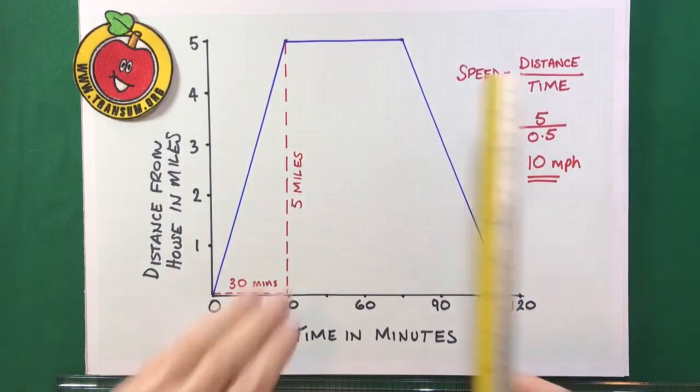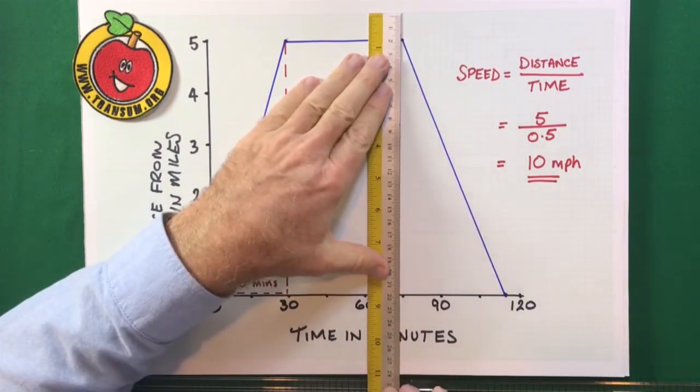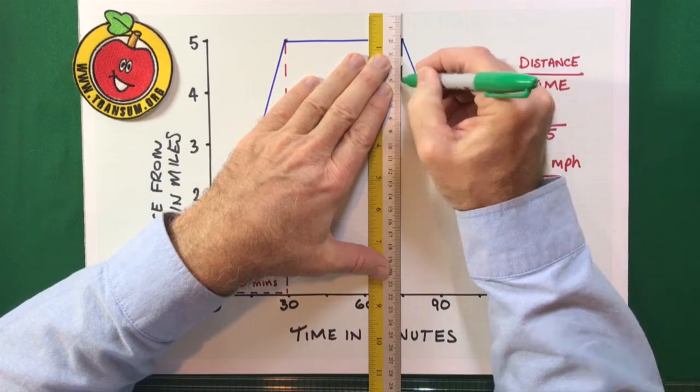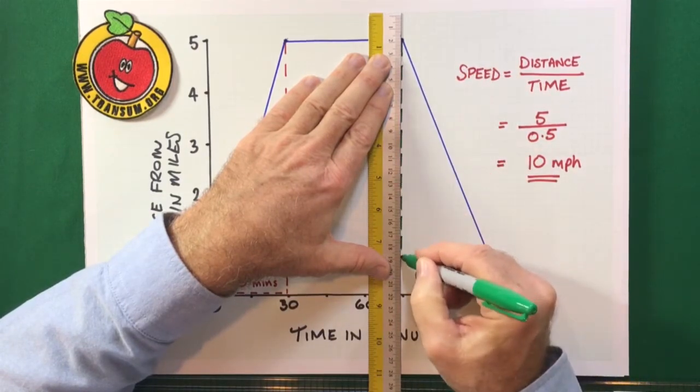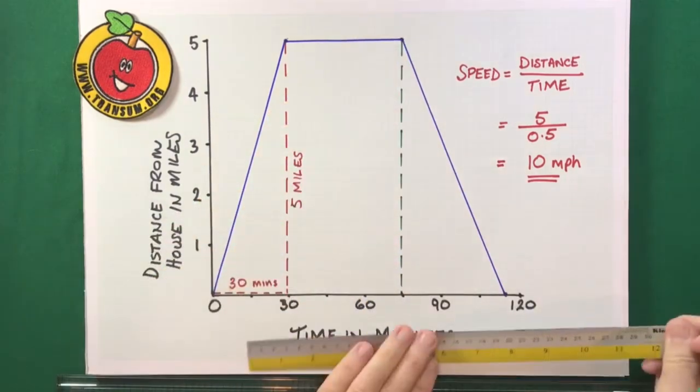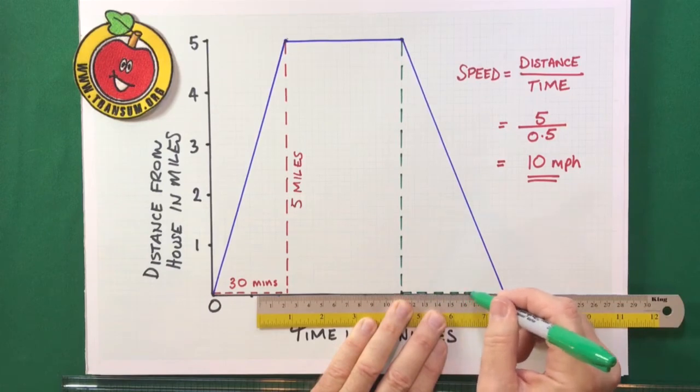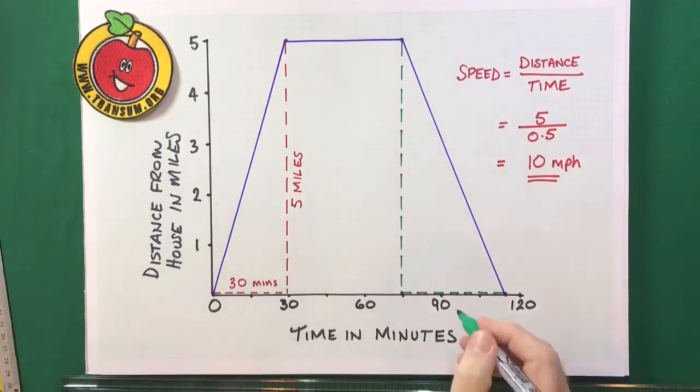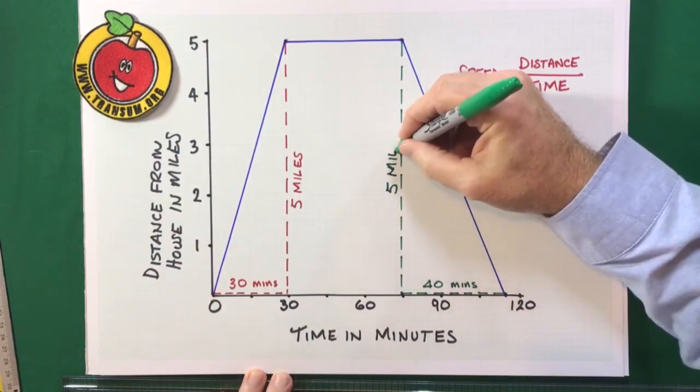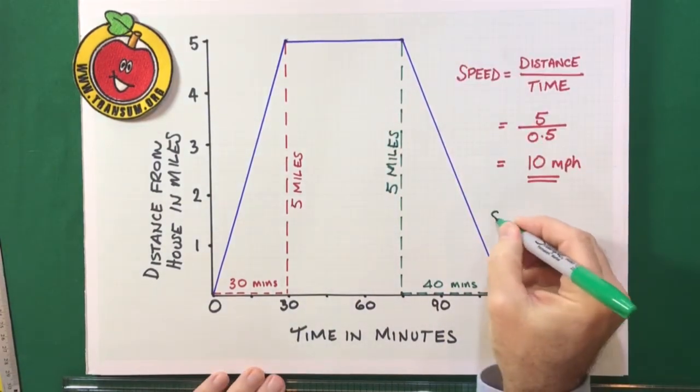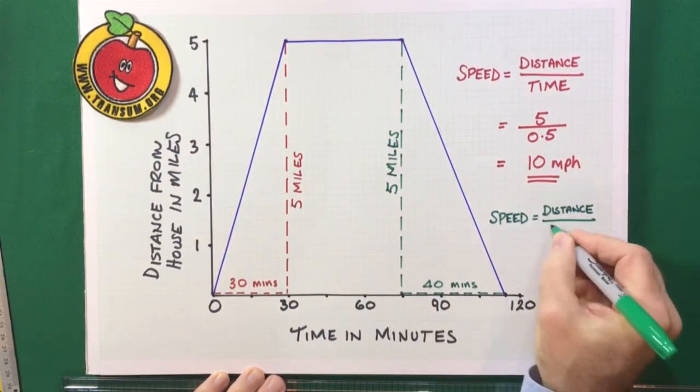Right, now, what about the speed for the return trip? So, I'll do the same thing again. I want to work out the rise divided by the run or the distance divided by the time. Same calculation. So, I'll make myself a little right angle triangle here on my graph. And I can see that the rise is, again, five miles. And the run, this case, is 40 minutes.